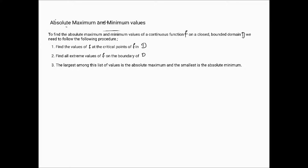In this video we are going to look at how we calculate absolute maximum and minimum values of multivariate functions. To do this, I have listed here a procedure comprising approximately three steps.